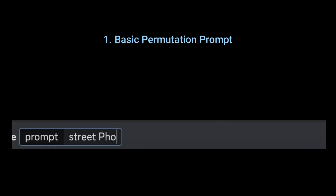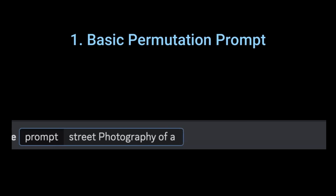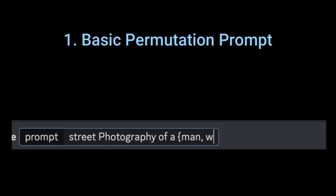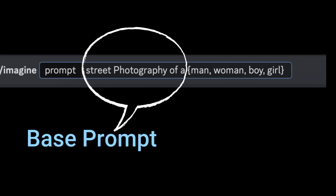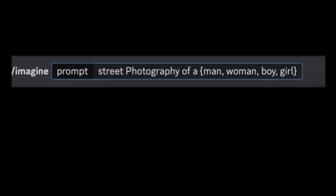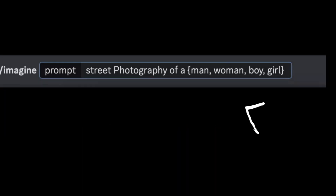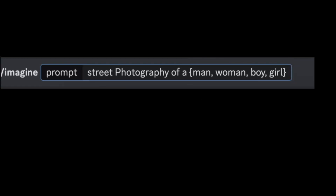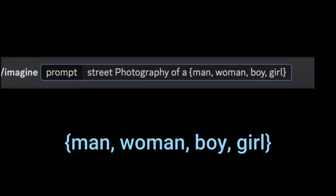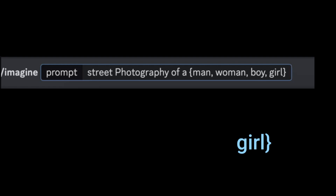A basic permutation prompt can be something like: street photography of, then curly brackets containing man, woman, boy, girl. Any text outside the bracket is the base prompt — the part that never changes, in this case 'street photography of'. Any text inside the curly bracket is an option — the part that changes in each prompt, in this case man, woman, boy, and girl.